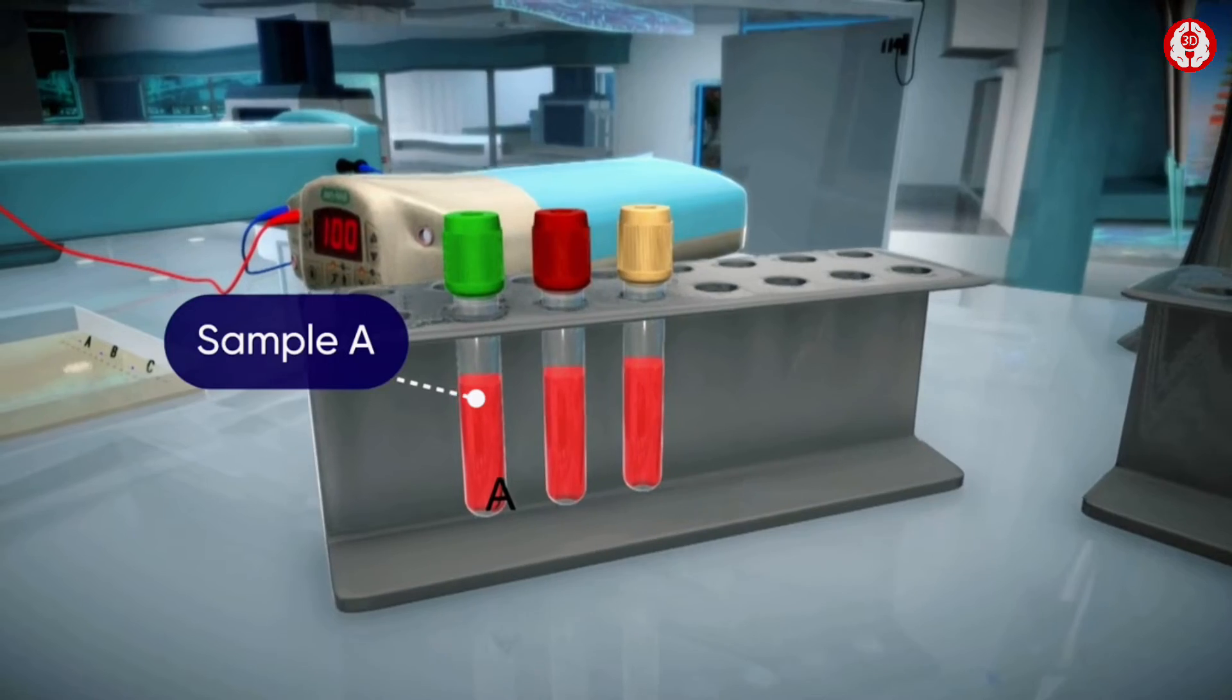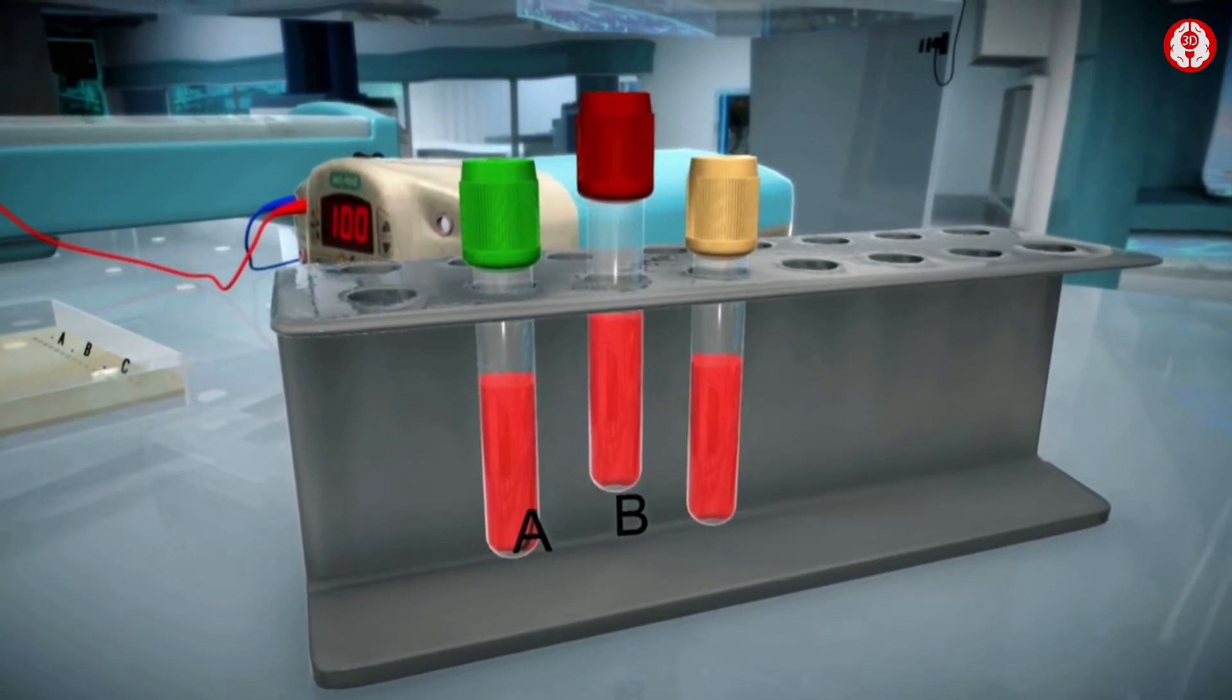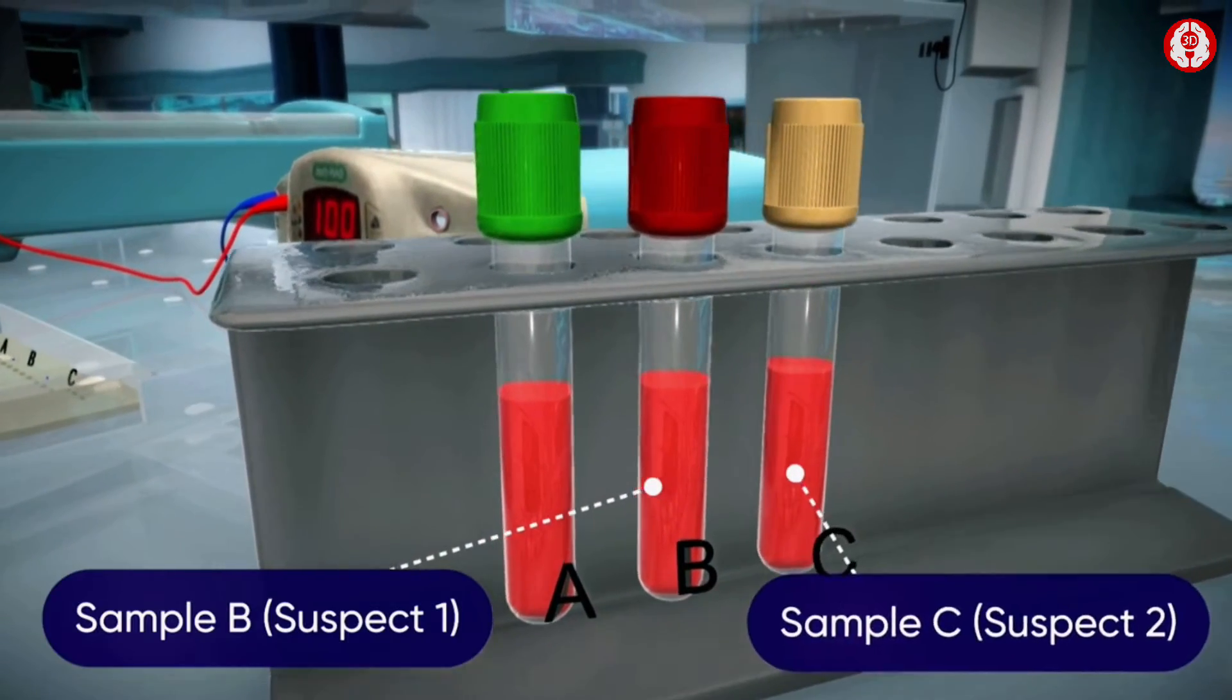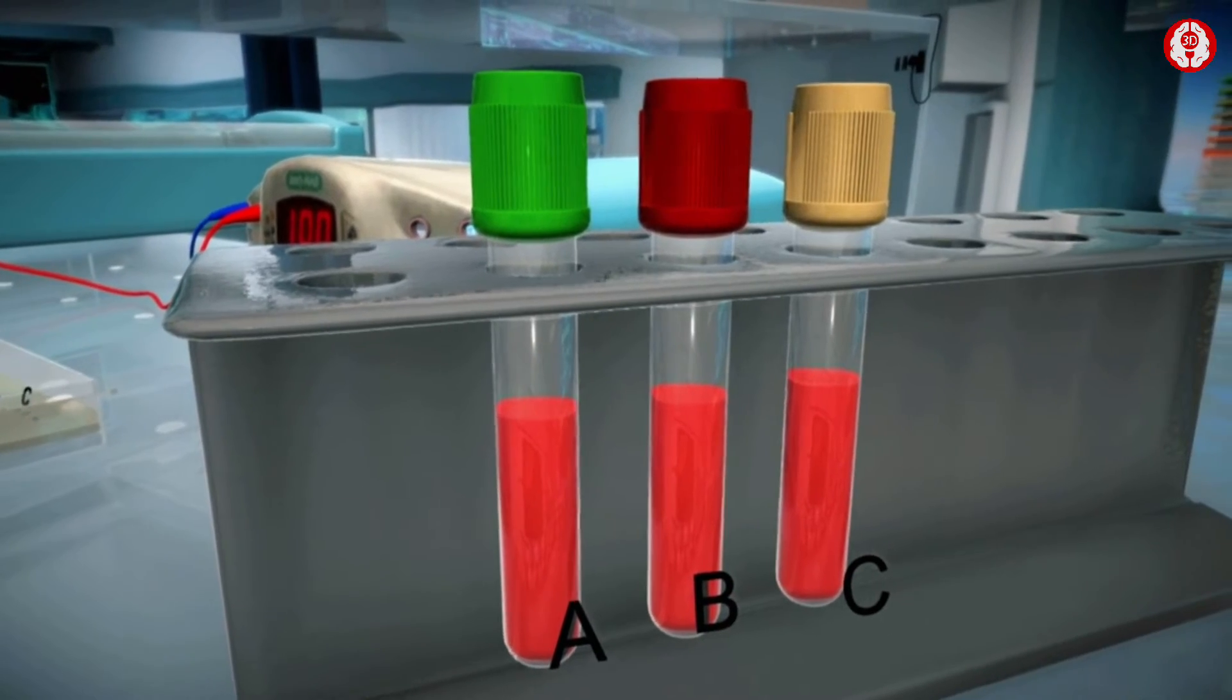Let's call it sample A. Here they have two more DNA samples, B and C, which have been collected from the suspects.